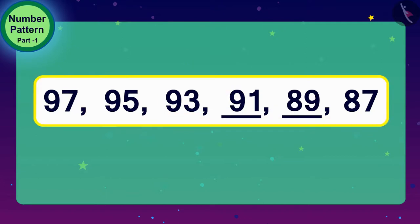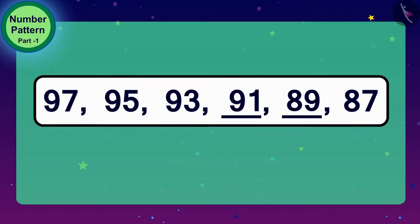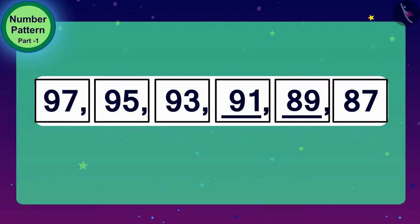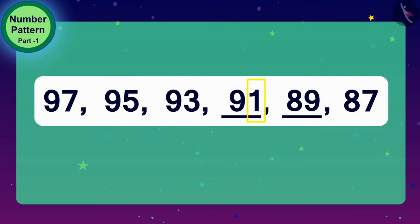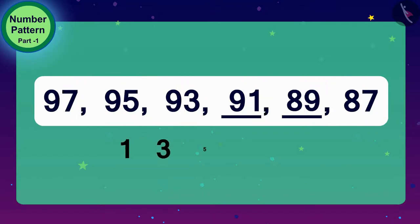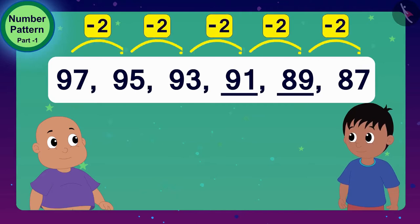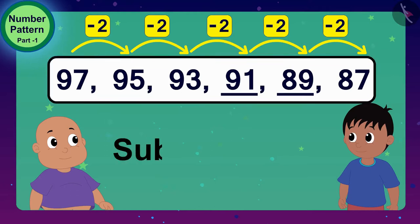Children, do you see something special in this pattern, like the pattern of even numbers? All numbers in this pattern have digits of 1, 3, 5, 7 or 9 in the unit place. Such numbers, which have digits of 1, 3, 5, 7 or 9 in the one-digit place, are called odd numbers. Raju and Bablu, like you, completed this number pattern by using the subtraction process.